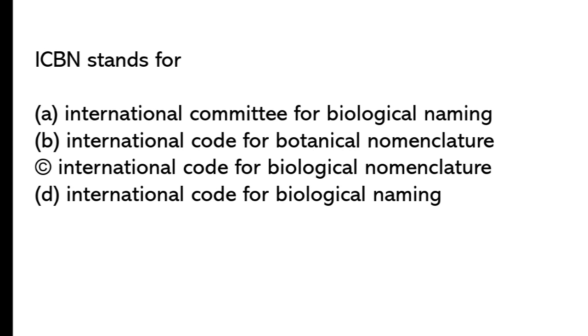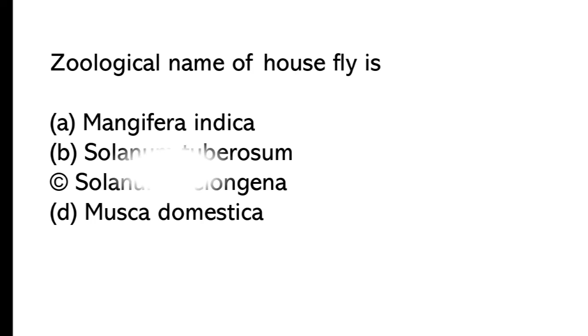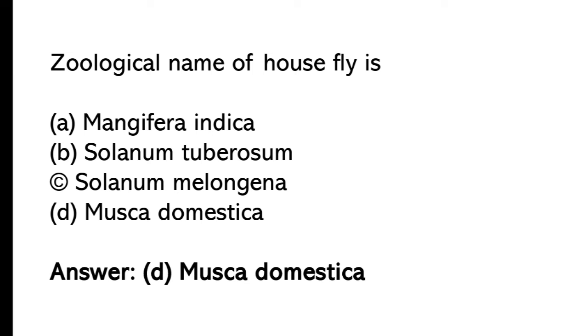ICBN stands for: International Community for Biological Naming, International Code for Botanical Nomenclature, International Code for Biological Nomenclature, International Code for Biological Naming. So the correct answer is option B, International Code for Botanical Nomenclature. Zoological name of house fly is: So the correct answer is option D, Musca domestica.